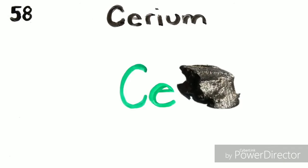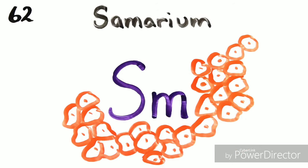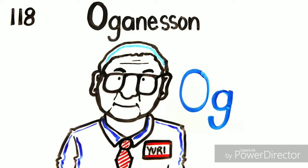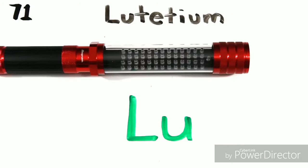Lanthanum, Cerium, and Praseodymium, Neodymium is next to Promethium, then 62, Samarium, Europium, Gadolinium, Terbium, Dysprosium, Holmium, Erbium, Thulium, Ytterbium, Lutetium.